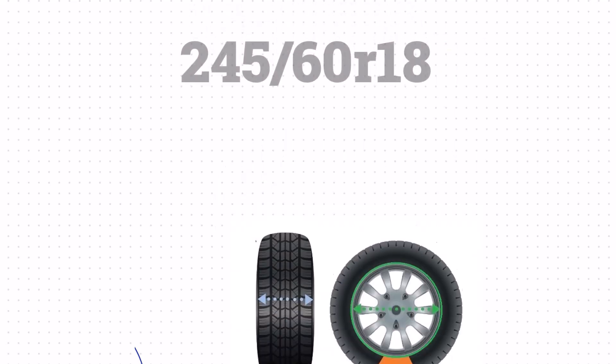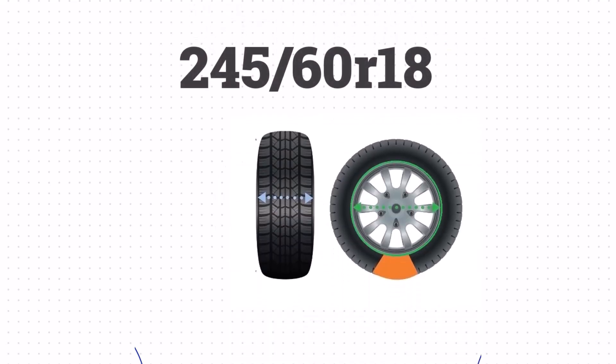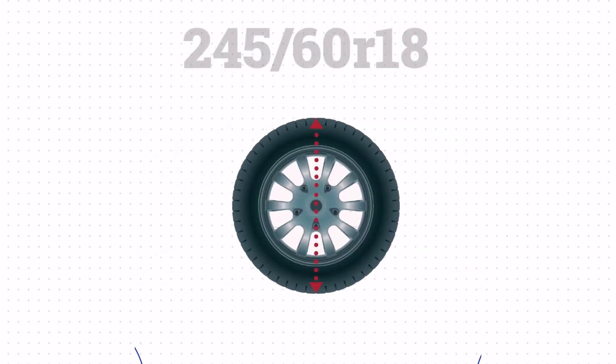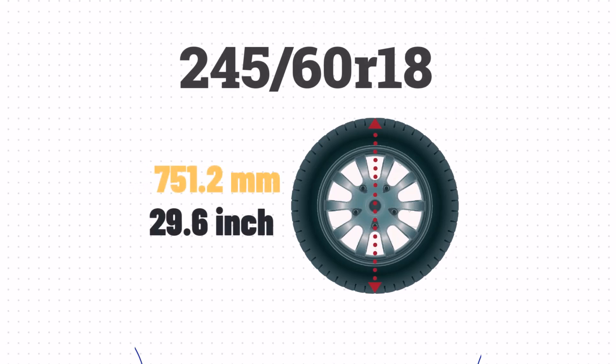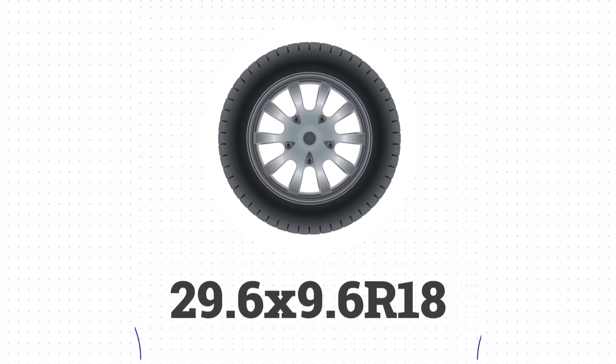Now that we've got the width, sidewall size, and wheel size, we can take all that together and get the height of the tire. We'll take the sidewall size, add the wheel size, and then add the sidewall size one more time. That gives us a height of 29.6 inches. The size 245/60R18 is equivalent to 29.6 x 9.6 R18 in inches.